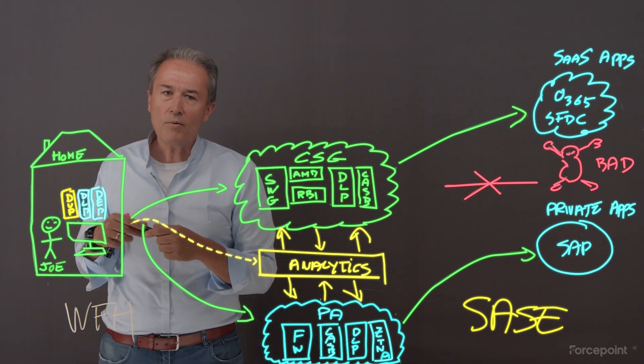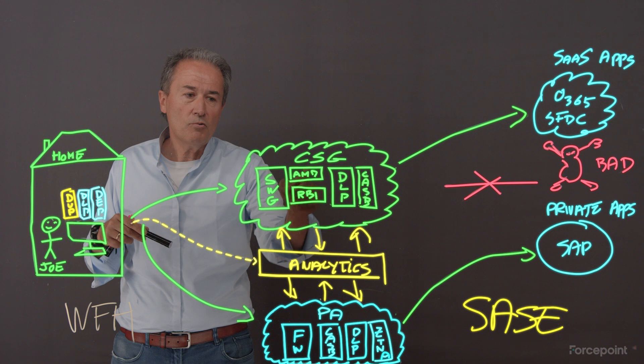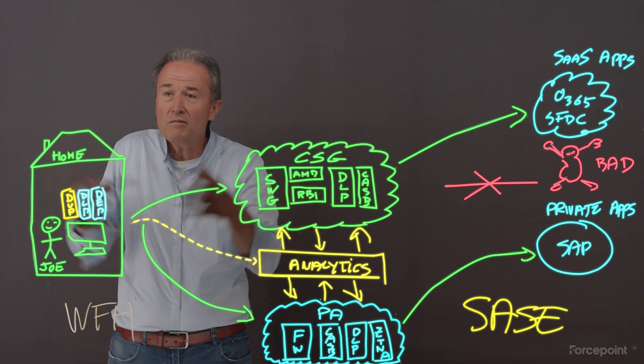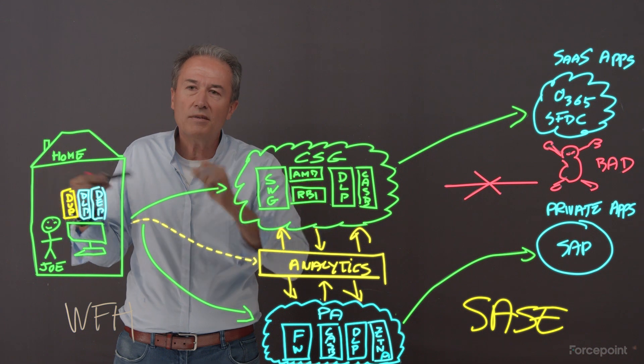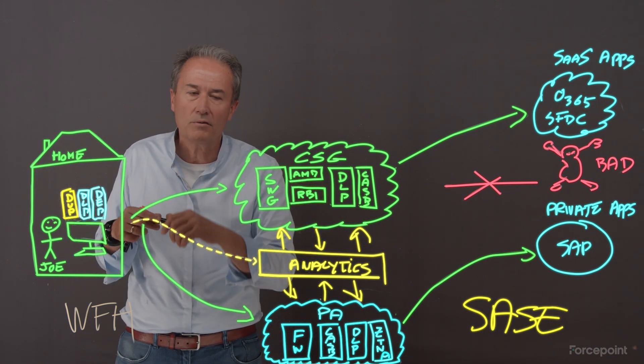If Joe is high risk, I'm going to send him to the remote browser isolation all the time. Because he's going to all these bad sites, he's risky, could be infected. That's okay. I'm going to send it to RBI. Now I'm fully protected. Now that's interesting.